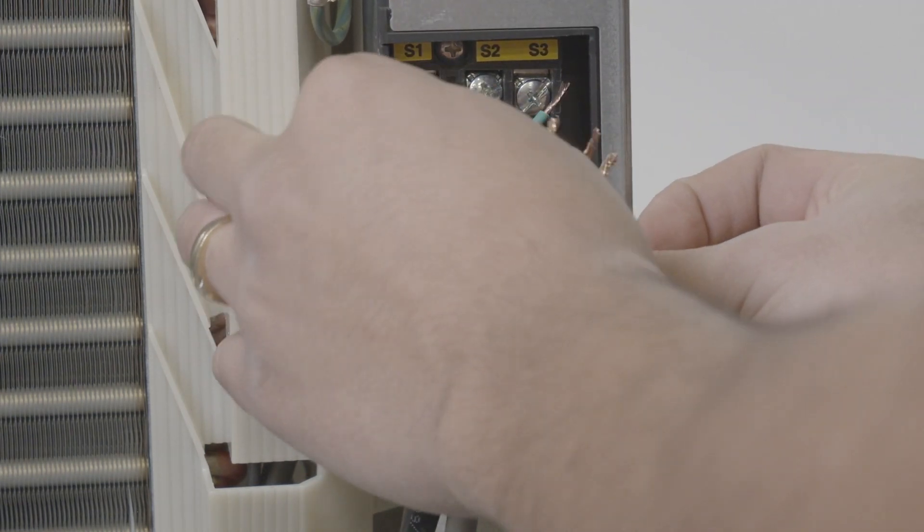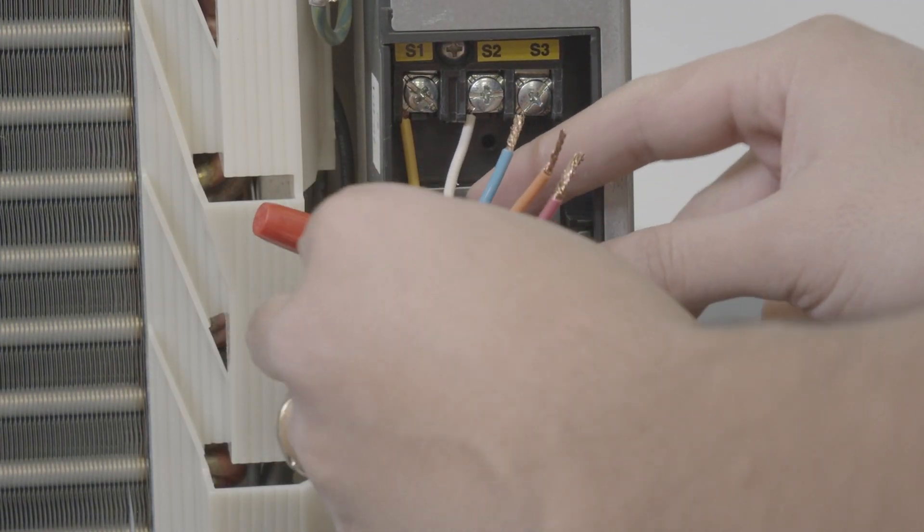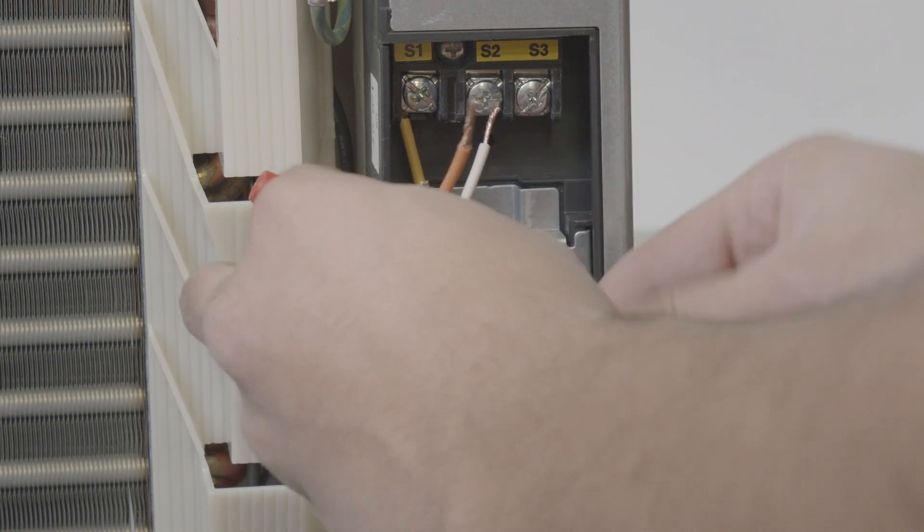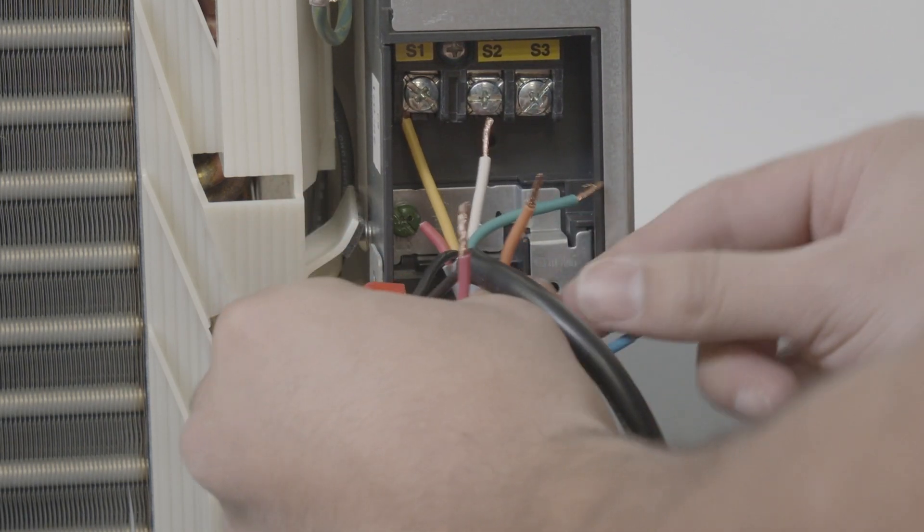For the S2 terminal, you need to terminate both the white line voltage wire powering up the pump and the S2 wire coming from the outdoor unit.